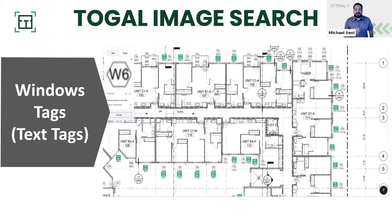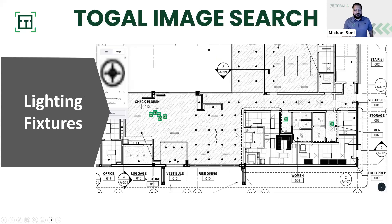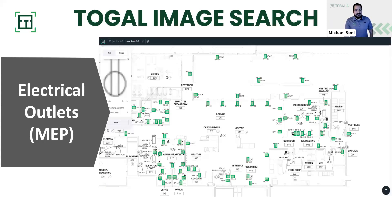We can also utilize image search to count window tags and text in particular. For this window tag, I selected W6 as my initial image and it was able to distinguish and search for W6 specifically — it didn't get caught up on the octagon symbol itself, and was able to filter out the W5s, T7s, T8s, T2s, and so on. Lighting fixtures work incredibly well using our image search. The AI ignores background noise, different stripes, and patterns such as acoustical ceiling tile versus gypsum board. We can also use it to count electrical outlets, MEP switches, and things of that nature — it ignores all text, excess information, and lines that cross over it, looking strictly for the electrical outlet symbol.